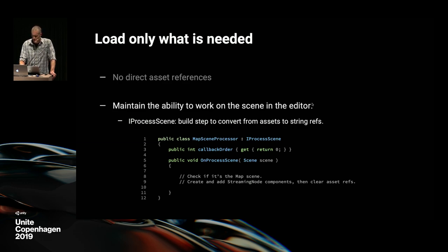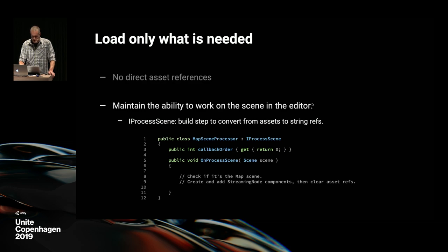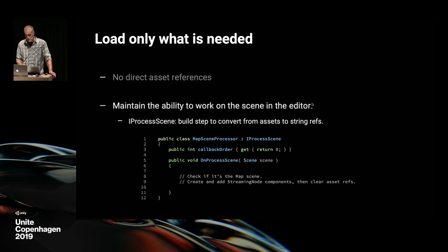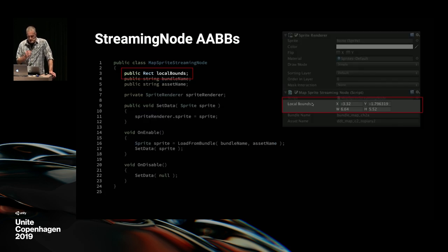iProcessScene is an interface the editor gives you as a callback to each scene in the build right before runtime. For device builds this happens during the build process; for editor builds it happens at runtime right at scene load. You can modify the scene and do whatever you need to it. So we find all those sprite renderers in the scene, add the new streaming node component, and switch over the asset references. This is an automatic step — from a production standpoint, this is really good because we haven't changed any of the world data that we've already built, we've just added some tool steps on top of what's already there.